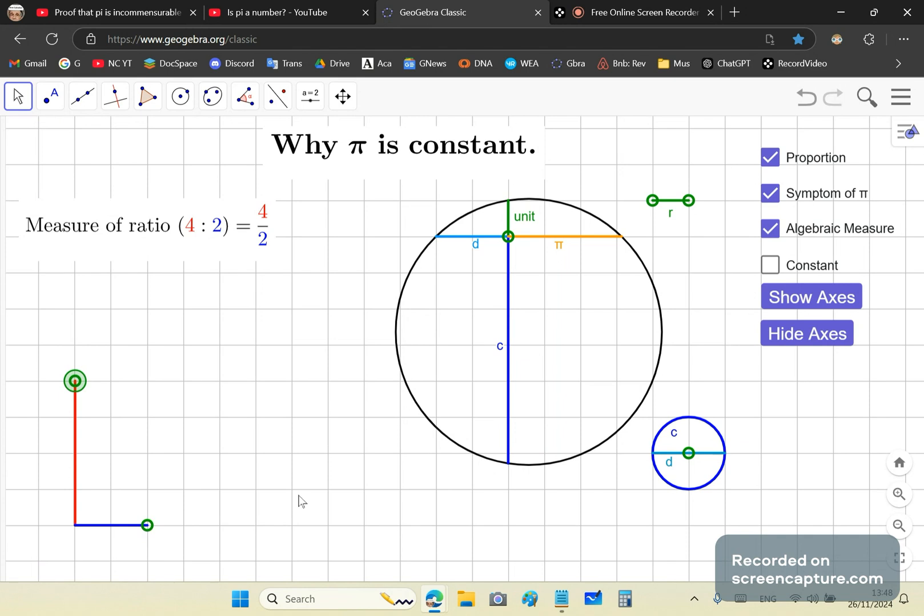Now, I can take any other proportional triangle. I can take any other length. I could take that length, I could take this length, I could take any of these lengths, and any of these equivalent ratios will have the same measure. That means 4 over 2, or just 2, if you divide 4 by 2.